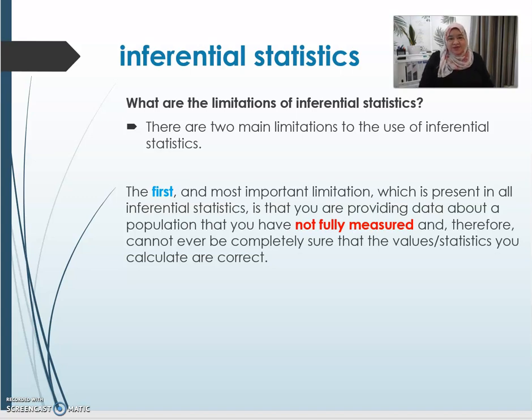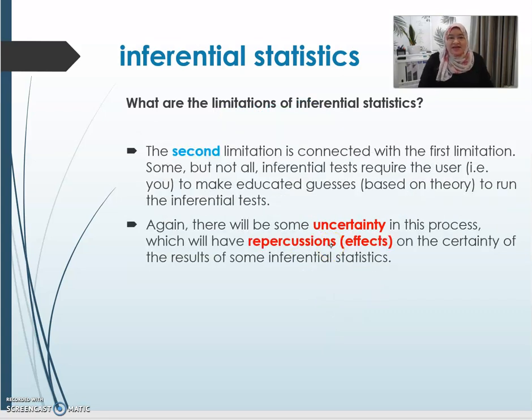What are the limitations of inferential statistics? There are two main limitations highlighted here. The first one is the most important limitation present in all inferential statistics: that you are providing data about a population that is not fully measured, because we are not using the whole population, but we are using the sampling technique. Therefore, you cannot ever be completely sure that the value or statistics you calculated are correct.